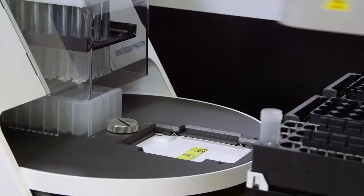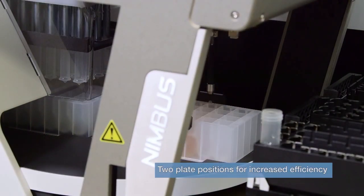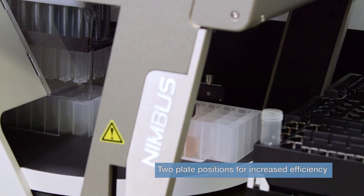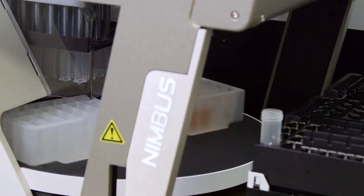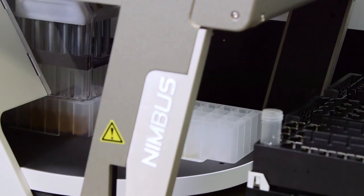The gripper arms transfer one plate to the loading position. The instrument then rotates the plate to the processing position under the magnetic head.